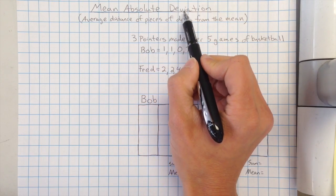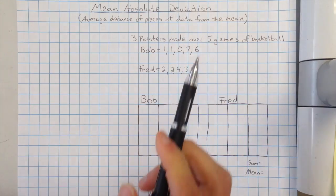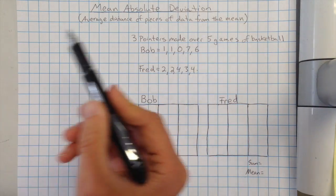So mean absolute deviation, what that really means - when we say the word mean in statistics, that means the average. Remember the average, you add all the numbers together, divide by how many there are. And when we say absolute deviation, deviation similar to the word deviate, that means like if you're going somewhere and you end up going somewhere else. So it's kind of like how far away are things.